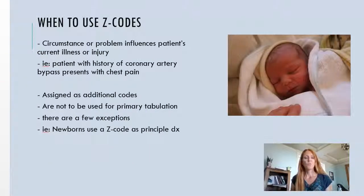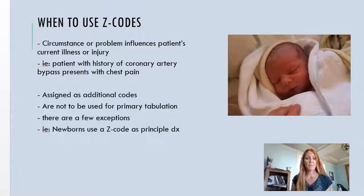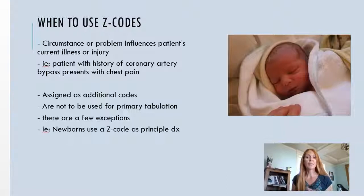So when do we use them? Anytime there's a circumstance or problem that influences the patient's current illness or injury, we would use a Z code. For example, let's say we have a patient with a history of coronary artery bypass who's coming in with chest pain. The chest pain is going to be a regular diagnosis, and then we would use a Z code for the coronary artery bypass — that shows the history. The coronary artery bypass is not a current thing; they've already had it done, so it's a status.